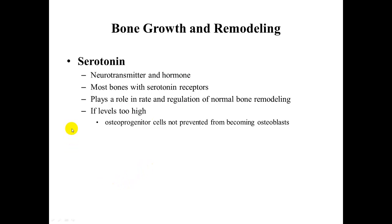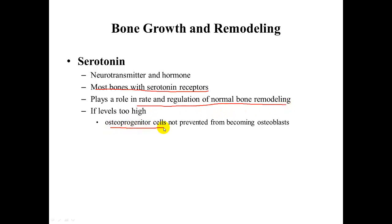Serotonin is both a neurotransmitter and a hormone. Most bones have serotonin receptors, and it plays a role in both the rate and regulation of normal bone remodeling. If serotonin levels are too high, osteoprogenitor cells — which give rise to osteoblasts and osteoclasts — are not prevented from becoming osteoblasts, resulting in too much bone growth.